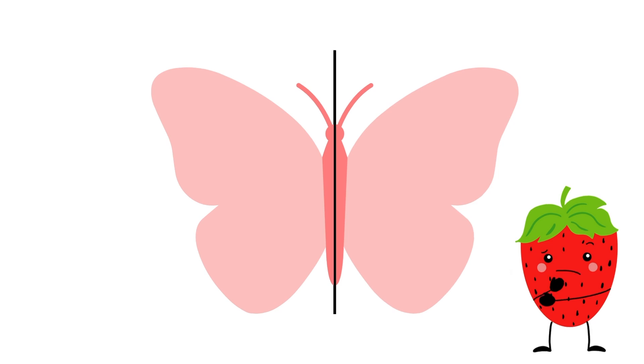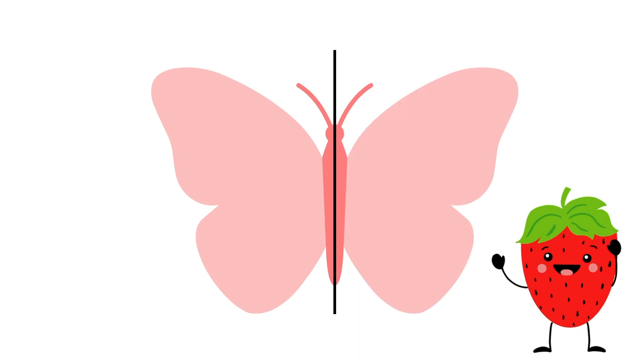If I draw a line down this butterfly, is it symmetrical or asymmetrical? It's symmetrical! If I cover half of the butterfly, we can see that it is the same on both sides. If we folded it in half, the sides would match up perfectly.